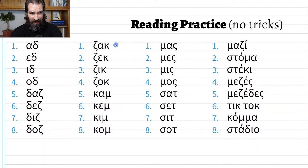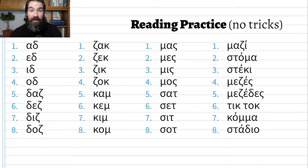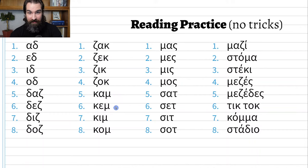In the second column we start with the zeta sound. Number one: 'zak.' Number two: 'zek.' Number three: 'zeek' — remember the iota looks like an I but it's a long E sound, so never 'zik,' always 'zeek.' Number four: 'zok.' Number five has kappa, some vowels, and ends with mu — 'kam.' Number six: 'kem.' Number seven: 'keem.' Number eight: 'kom.'